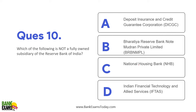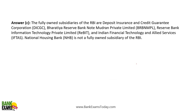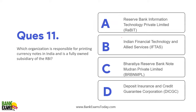Which of the following is not a fully owned subsidiary of RBI? The options are: DICGC, BRBN (Bharatiya Reserve Bank Note Mudran Private Limited), MPL, NHB (National Housing Bank), and Indian Financial Technology and Allied Services (IFTAS). National Housing Bank is not a fully owned subsidiary of RBI. DICGC, Bharatiya Reserve Bank Note Mudran Private Limited, REBIT, and IFTAS are subsidiaries, but NHB is not fully owned by RBI.